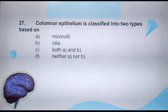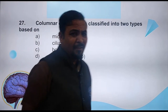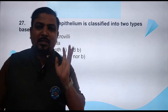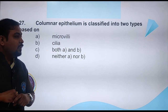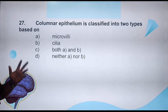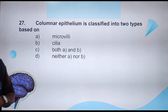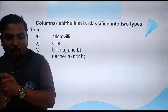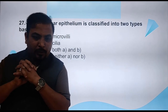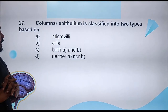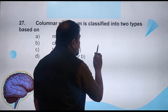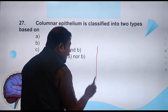Columnar epithelium is classified into two types. In those questions we solved earlier, you could have noticed something. If you noticed, you would get the answer. Many people are answering B. It is quite simple — columnar epithelium is of two types.